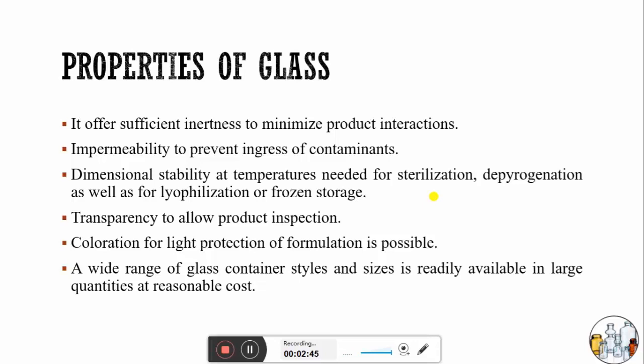Another advantage is that glass is transparent, which allows product inspection. For products which are light sensitive, coloration of glass is possible by adding iron oxide. Iron oxide can make glass amber in color, providing protection for light-sensitive formulations. Glass is also available in different styles and sizes readily in the market at reasonable cost.